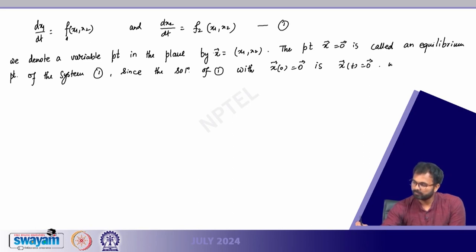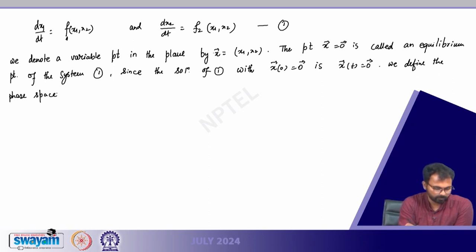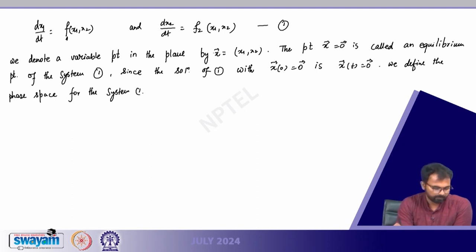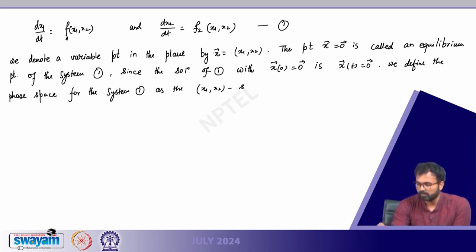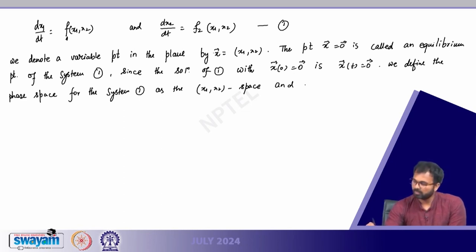We define the phase space for the system as the (x1, x2) space, and we want to draw the portrait of trajectories x(t) for t positive in the space near x equals 0.